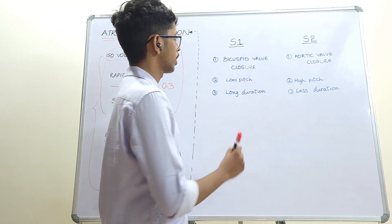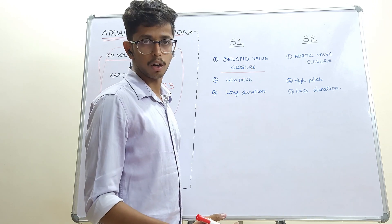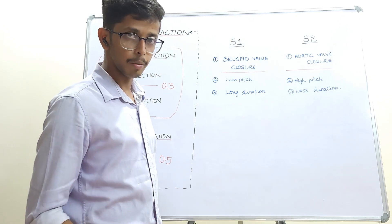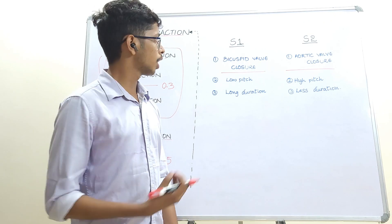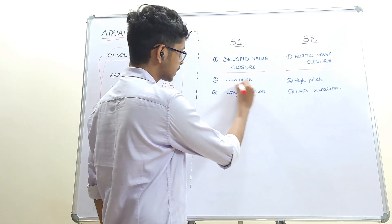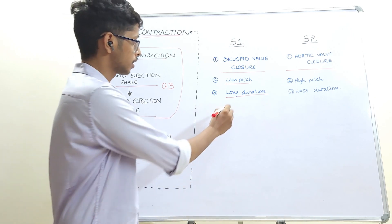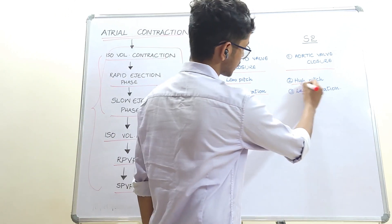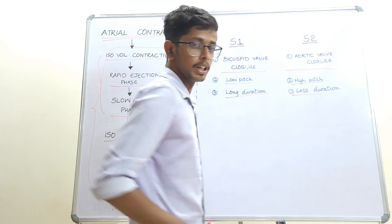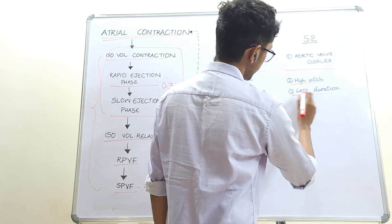S1 is due to bicuspid valve closure, just before isovolumetric contraction. S2 is due to aortic valve closure, just before isovolumetric relaxation. Here is an analogy to remember their pitch and duration: S1 is like a boy's proposal — low pitch and long duration. S2 is like a girl's rejection — high pitch and short duration. So S1 is low pitch and long duration, and S2 is high pitch and short duration.